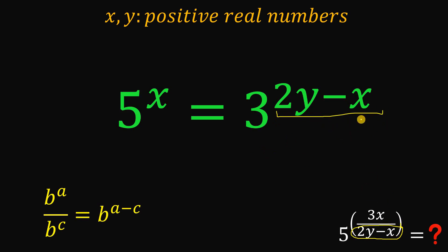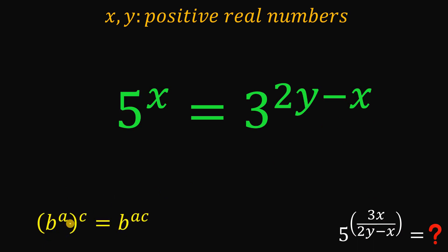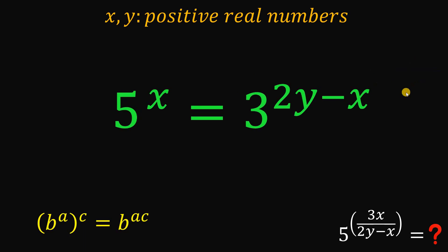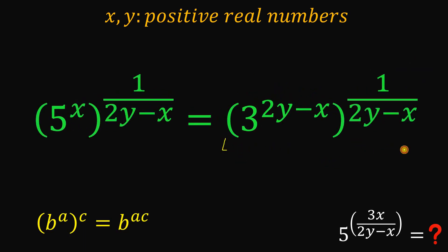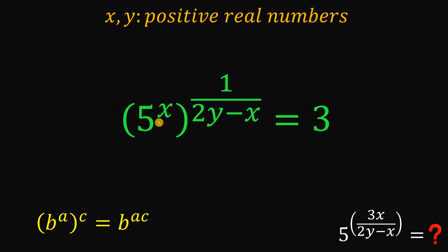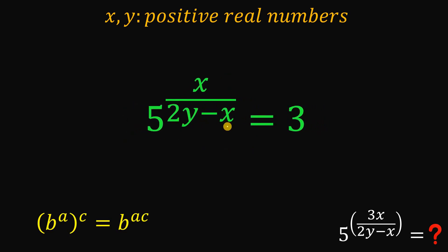Now we want to eliminate the exponent 2y minus x on the right side. Using the power-of-a-power law, we raise both sides by 1 over 2y minus x. On the right hand side, 2y minus x times 1 over 2y minus x becomes 1, giving us 3 raised to the power of 1. On the left hand side, we get 5 raised to the power of x over 2y minus x.